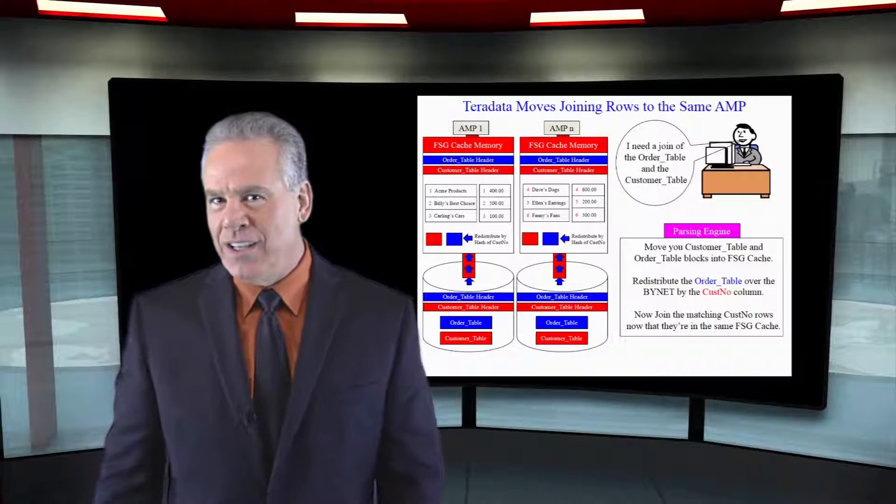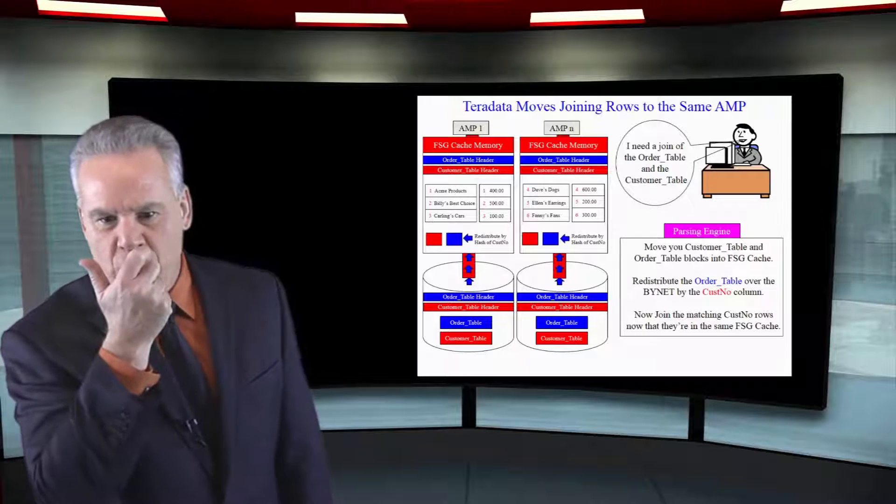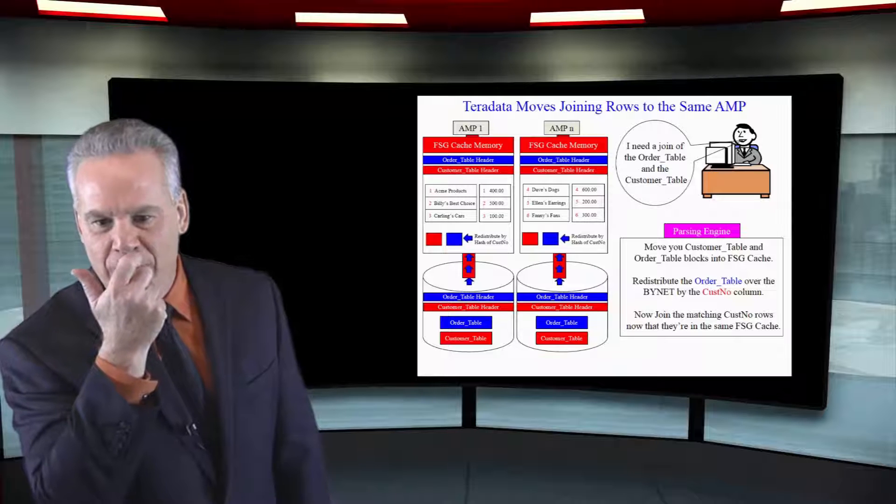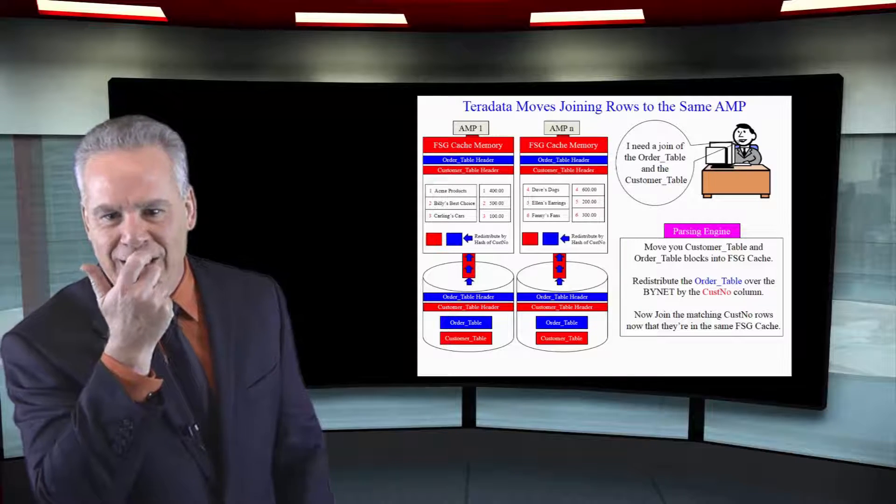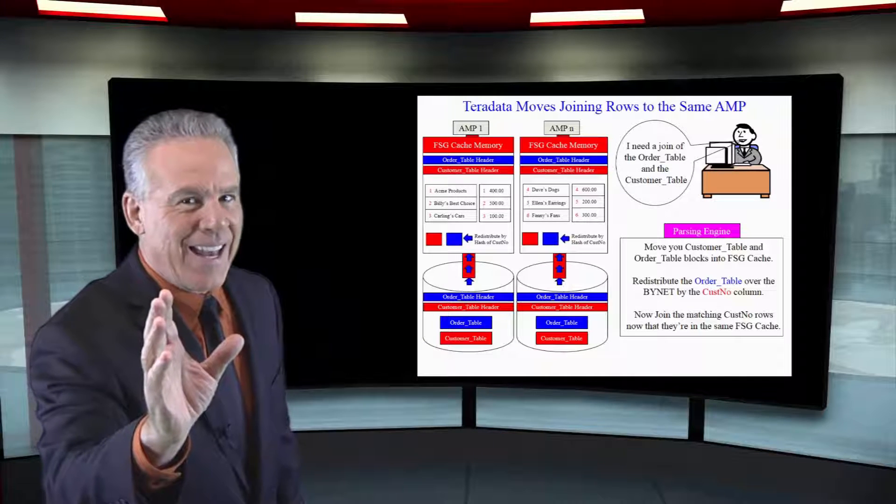Then the parsing engine gets on there and says, okay, we're going to join on Custno and Custno. I want you to redistribute the order table, hash it, but do it on the key of Custno. They're hashed. Those rows move across the binet.